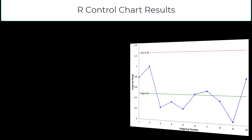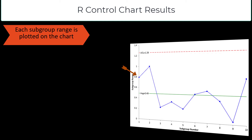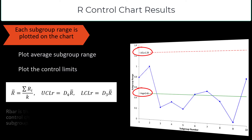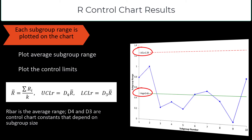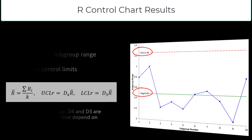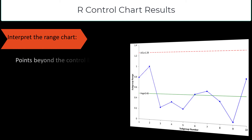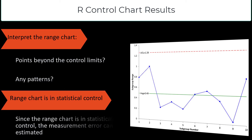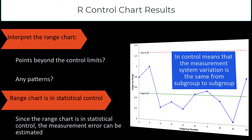You plot the results on the R control chart — all 10 subgroup ranges. The average range is 0.49, the upper control limit is 1.26, and here are the equations for calculating the control limits. Then you interpret the range chart: are there any points beyond the limits, any patterns? There are none, so this range chart is in statistical control.